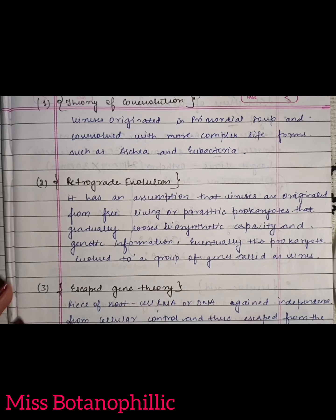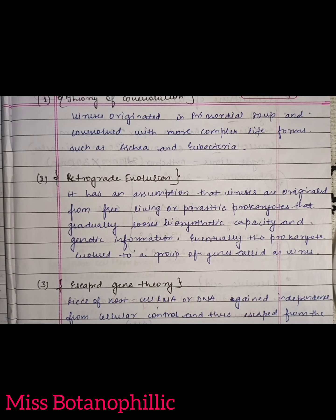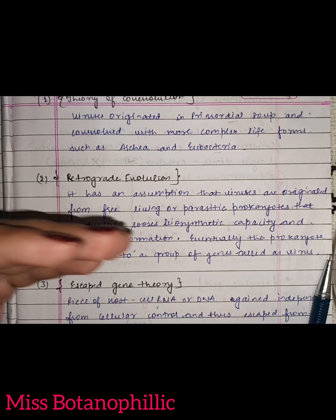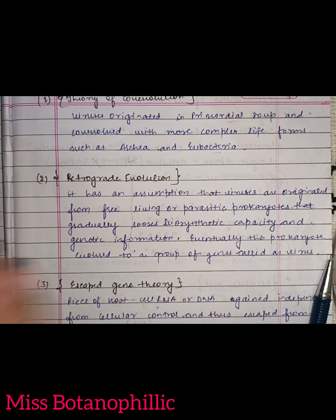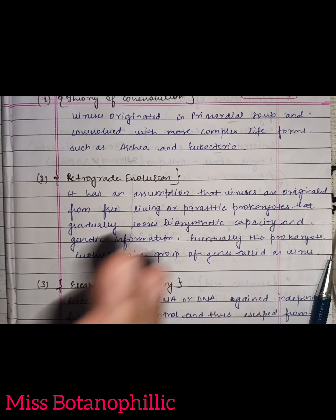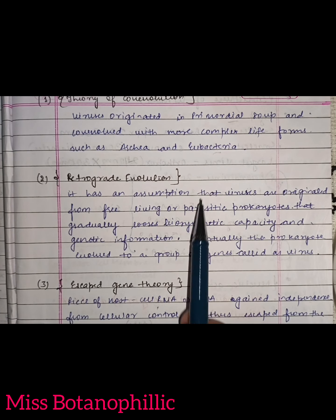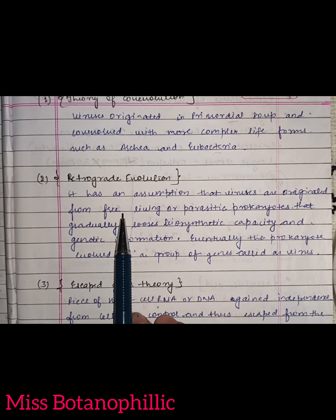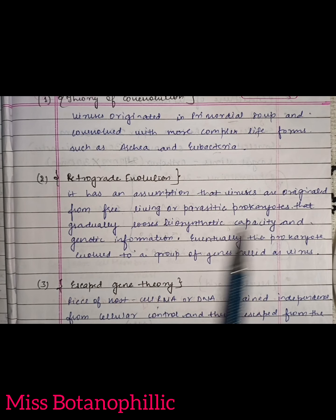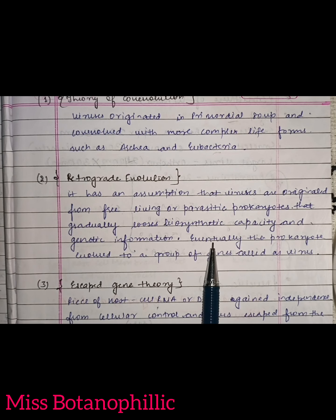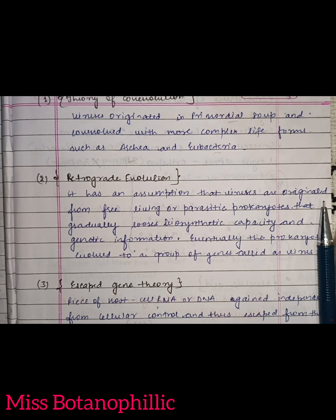Then we have retrograde evolution. What is the retrograde evolution theory? This is also a simple theory. Retro means reverse. When evolution goes backward, we call it retrograde evolution. It is assumed that viruses originated from free-living or parasitic prokaryotes that gradually lost their biosynthetic capacity and genetic information. Eventually, the prokaryotes evolved into a group of genes which we call viruses.